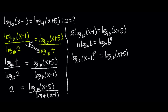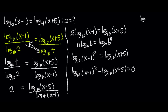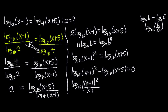I'm going to bring all logarithms to one side, so I get log to the base of 10 of x minus 1 all squared, minus log to the base of 10 of x plus 5, equals zero. From the law of logarithm, log(b) minus log(c) equals log(b over c). Applying this, I get log to the base of 10 of x minus 1 all squared, divided by x plus 5, equals zero.